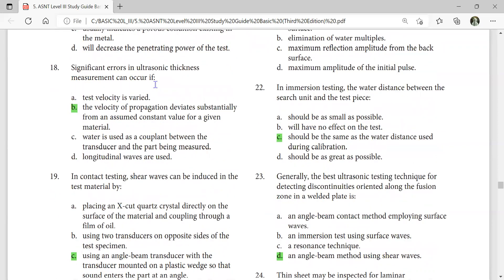Significant errors in ultrasonic thickness measurement can occur if the velocity of propagation deviates substantially from an assumed constant value for a given material.